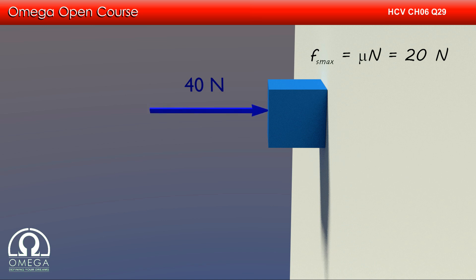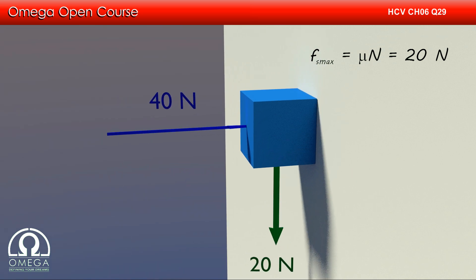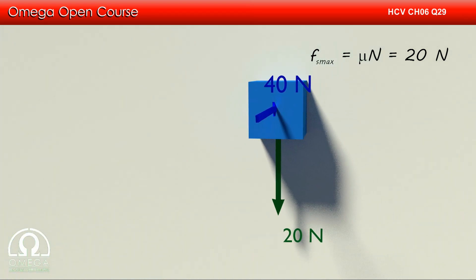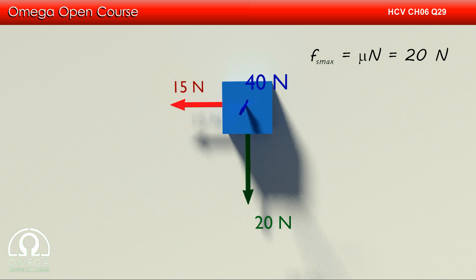Also, if the block moves, it will move in the direction of the resultant of the forces moving it. The gravitational force of Mg, that is 20 N, is pulling the block downwards. Another horizontal force of 15 N parallel to the wall is trying to move it horizontally.